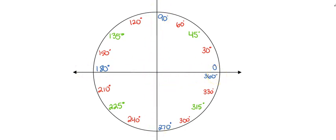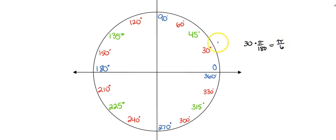There are three different patterns: each quadrant is a multiple of 90; halfway gives multiples of 45; and breaking into thirds means adding 30 each time. Notice that 90, 180, 270, 360 appear in all of them. Now convert all of these degrees into radians by multiplying by pi over 180. The first one: 30 degrees times pi over 180 gives 30/180 = 1/6, which means pi over 6.